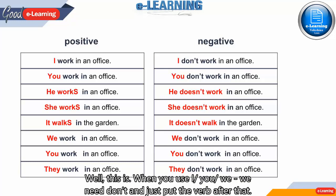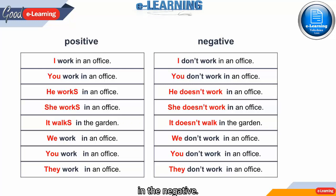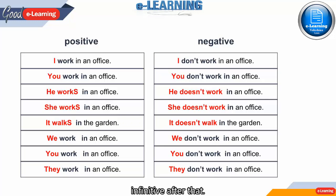When you use I, you, we, or they, we need don't — just put the verb after that. Be careful when we speak about he, she, or it. He works in the positive sentence. He doesn't work in the negative. The 's' from the positive goes to doesn't, and you have only the infinitive after that. Very important to remember: he works — he doesn't work.